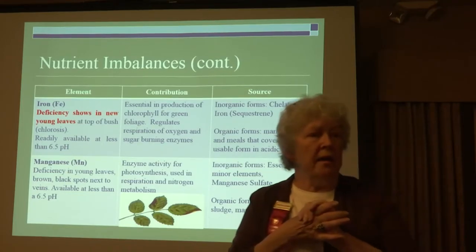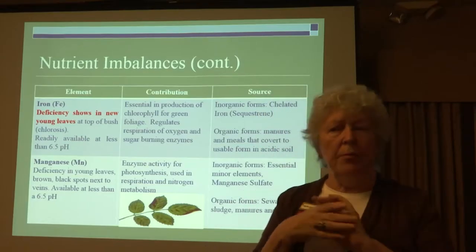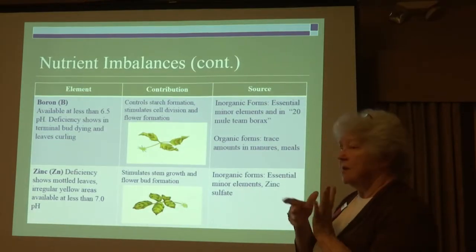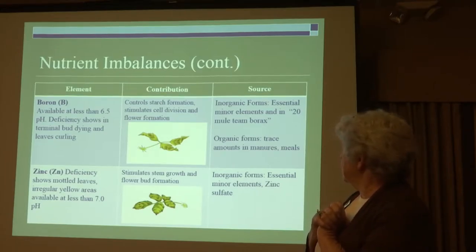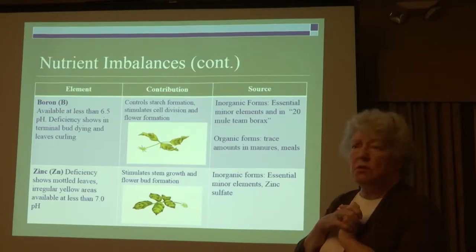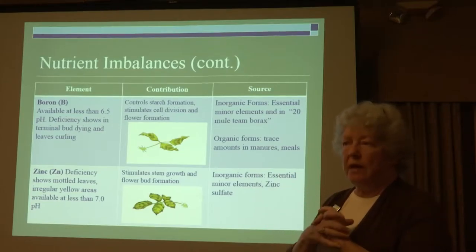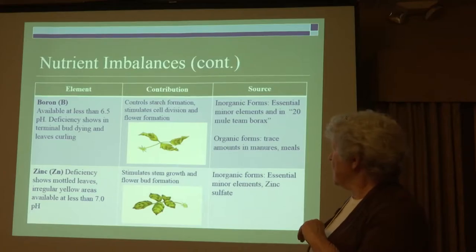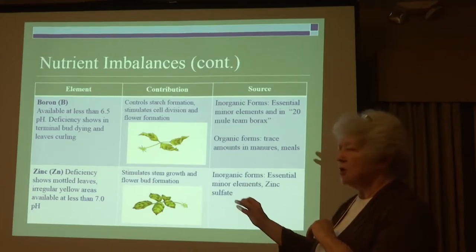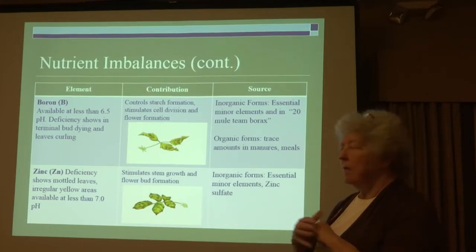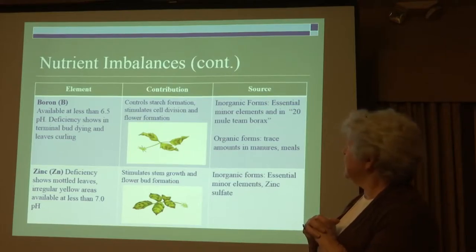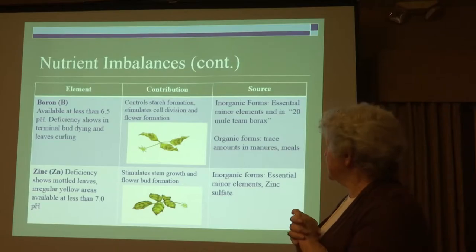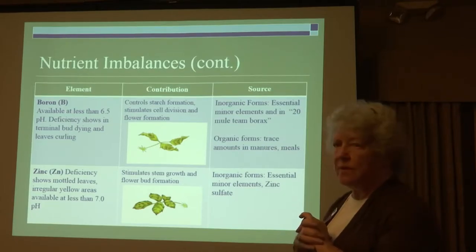Manures and alfalfa meal will help with manganese. Boron: we've talked about the problems in the Davis, Woodland, and Concord areas — organic products in the soil will help ameliorate that if possible. Zinc gives yellow blotches but is not often seen. These are micronutrients; don't often see a deficiency — usually we have enough.